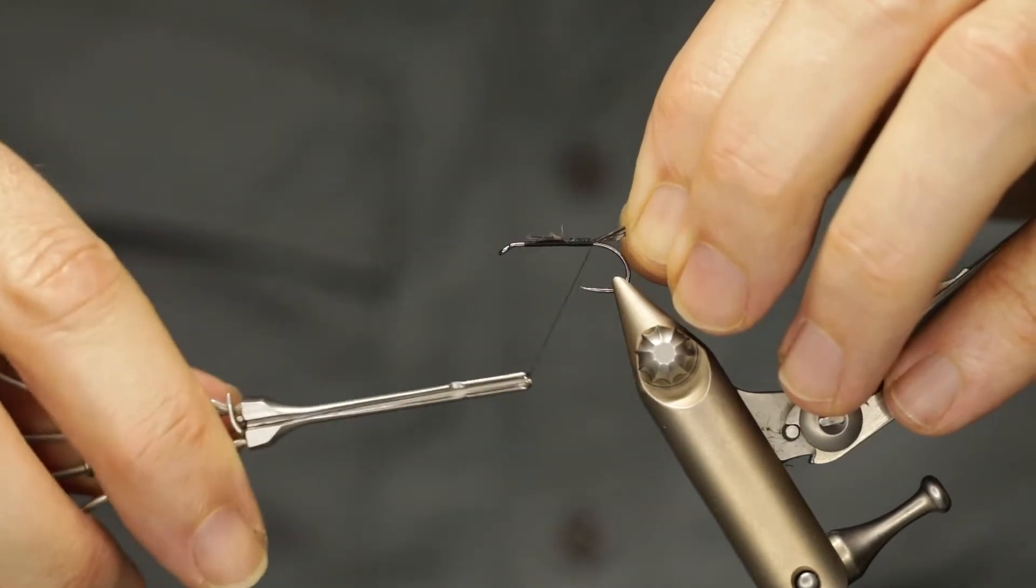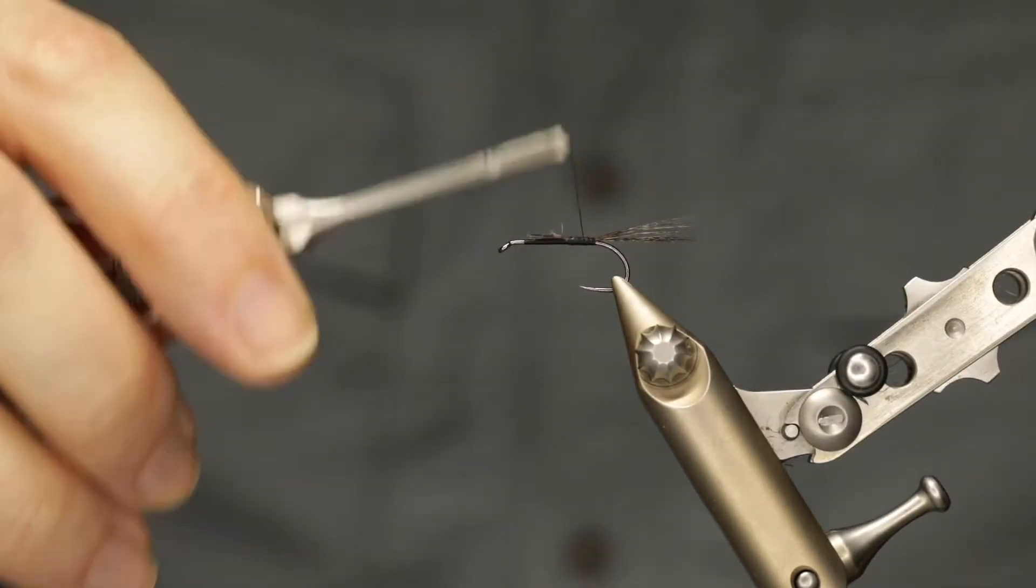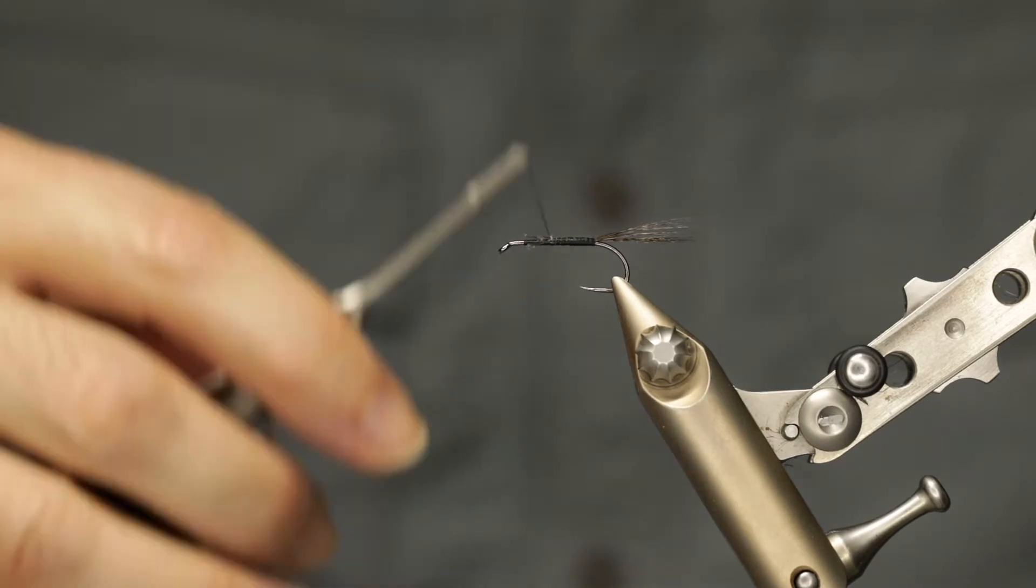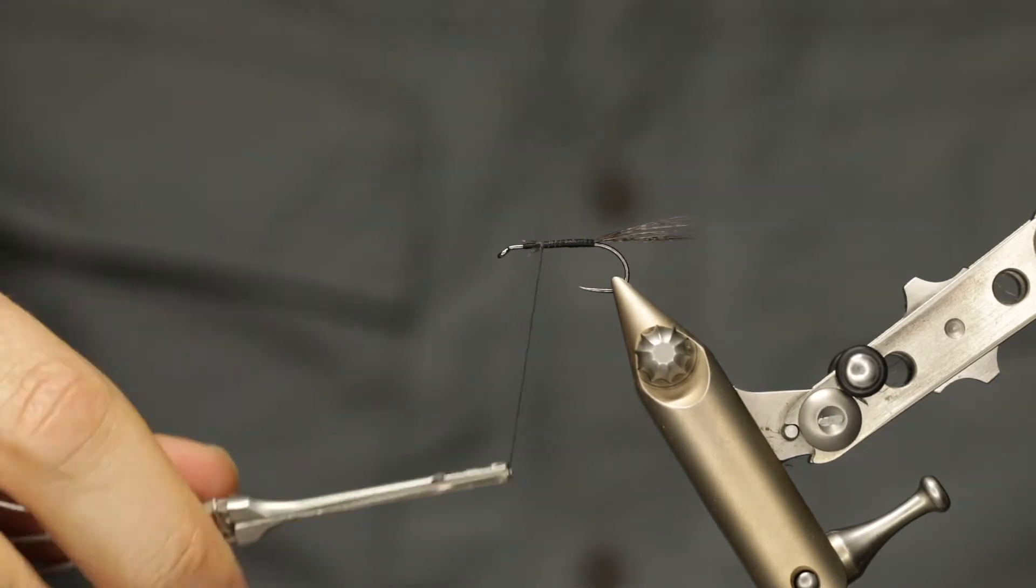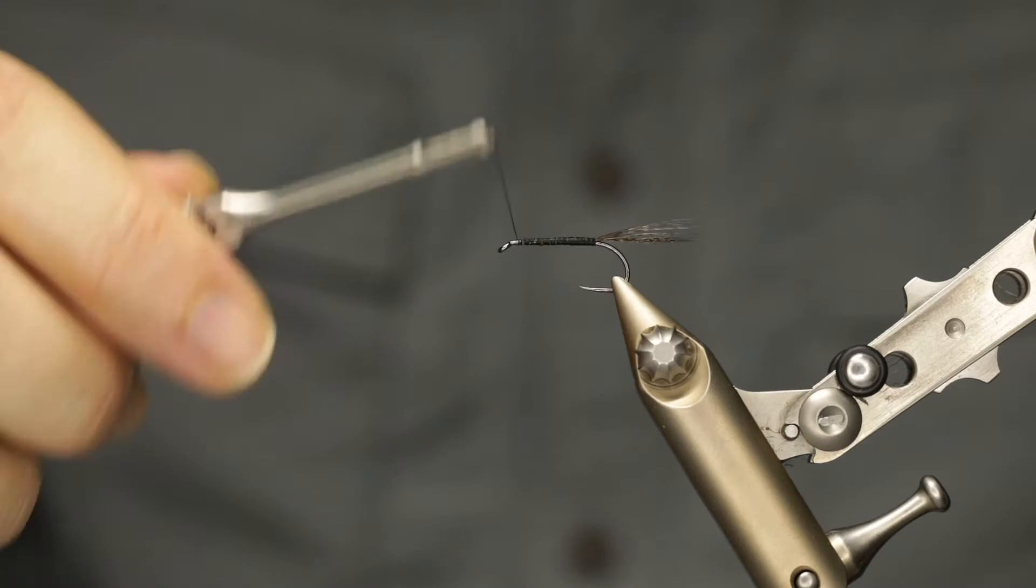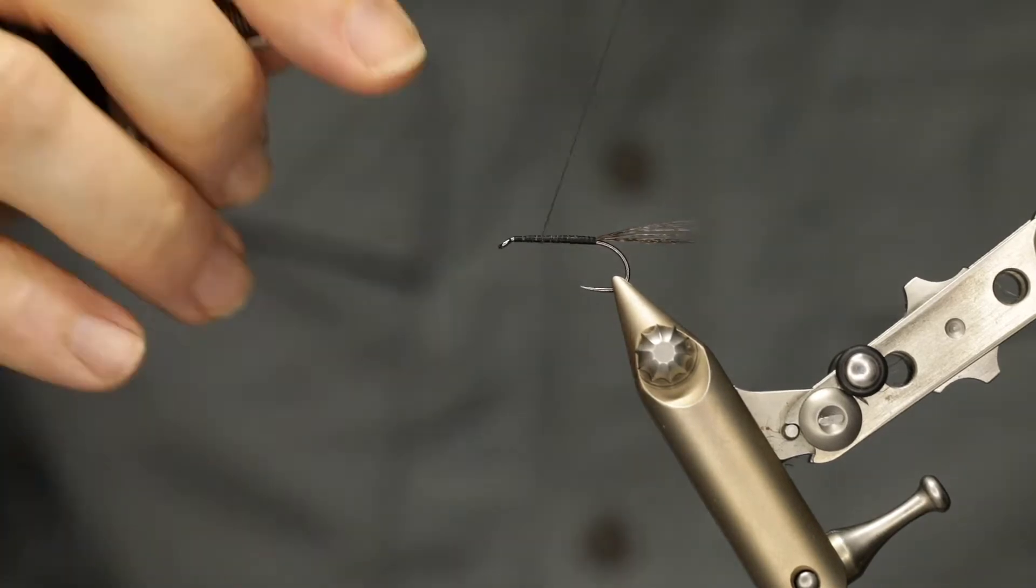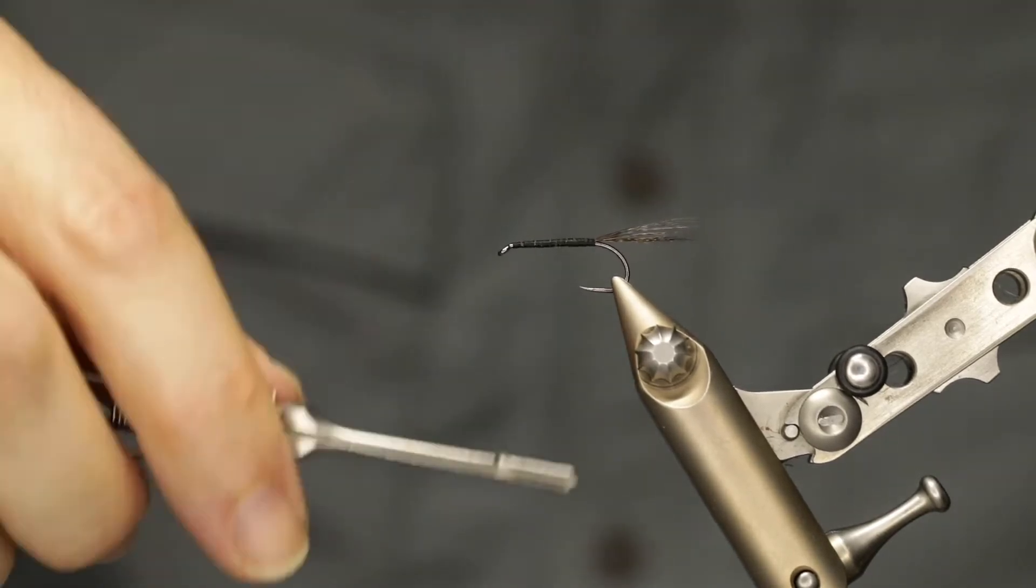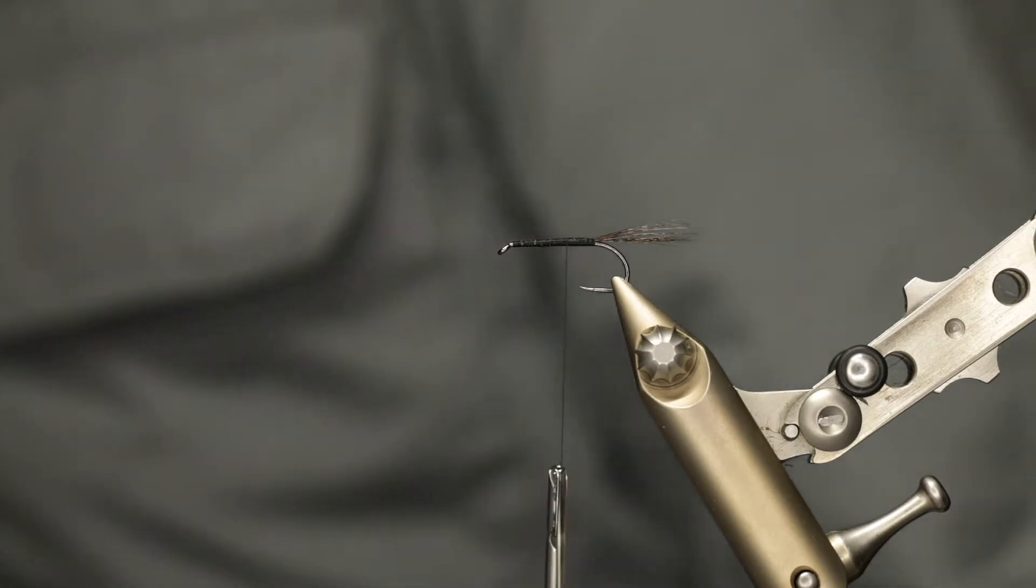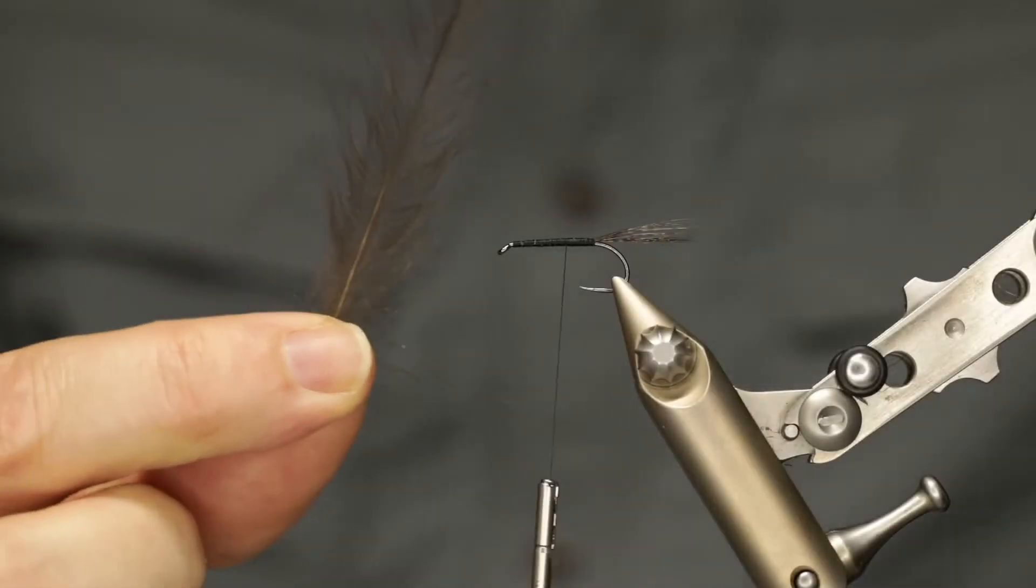Wrap underneath the feather to fix it in place and then start wrapping forward all the way through to the front of the hook so that we get a nice even body and tie in any loose bits associated with the cocktail leon tail. Then start wrapping all the way back to the point where you want to set in the first of our CDC feathers that are going to form up the body of the fly. In this case, it's going to just be a dark gray CDC.